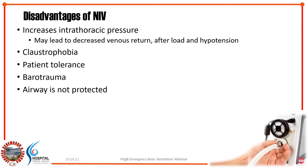The disadvantages of NIV include increased intrathoracic pressure, which reduces venous return and afterload — so optimize hemodynamically unstable patients before starting NIV. NIV can cause claustrophobia, requiring full patient cooperation. Patients must be able to tolerate the pressure provided by the ventilator. NIV can also cause barotrauma such as pneumothorax. Importantly, the airway is not fully protected compared to intubated patients, so there is always a risk of aspiration.